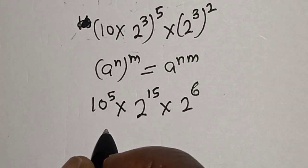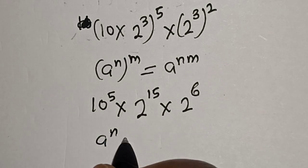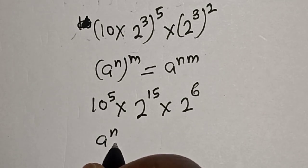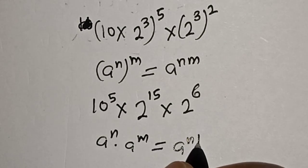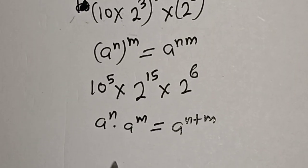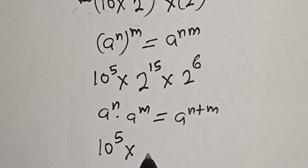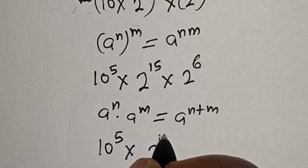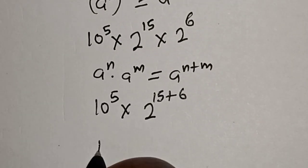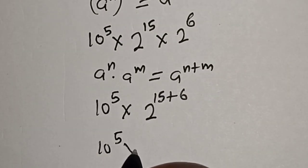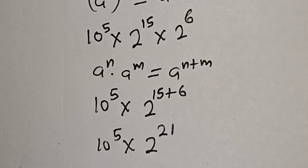Now remember this rule: a raised to power n multiplied by a raised to power m is equal to a raised to power n plus m. Then we have 10 raised to power 5 multiplied by 2 raised to power 15, and 15 plus 6 gives us 2 raised to power 21.